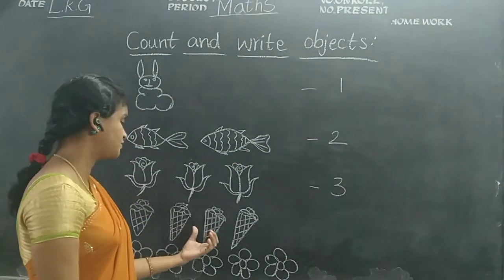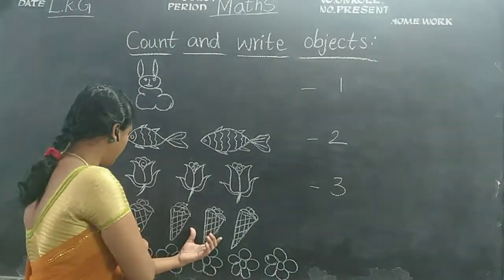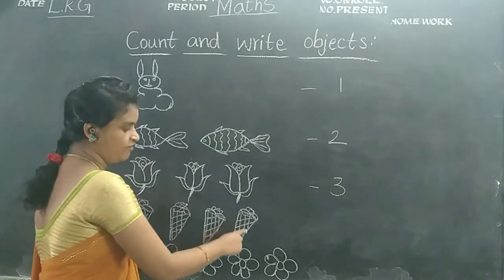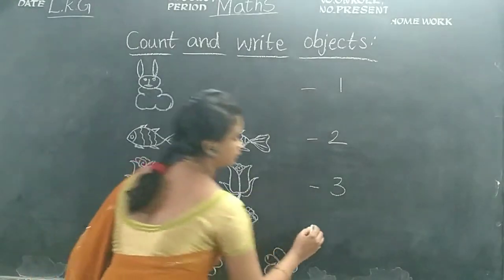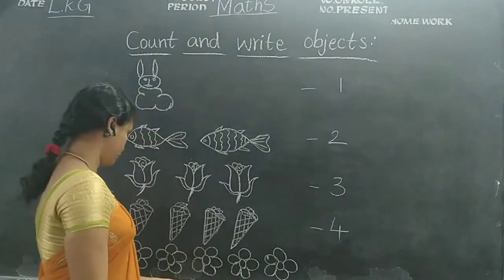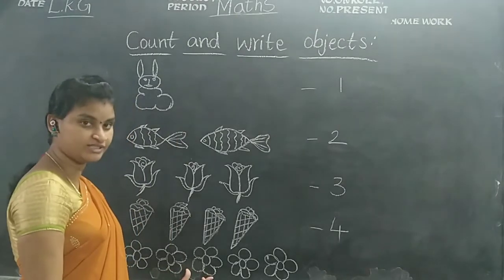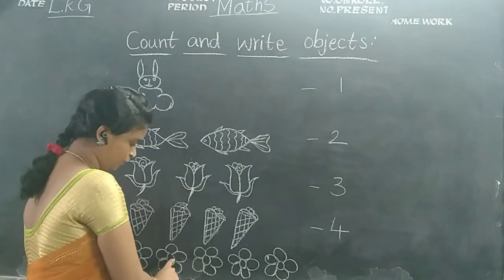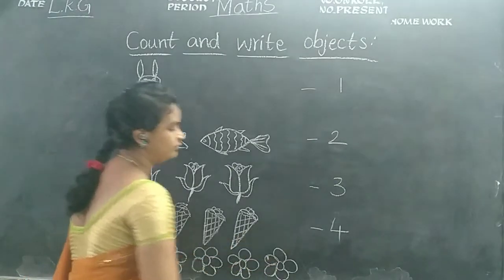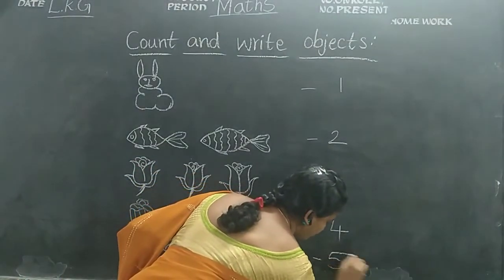Number three. Ice creams. How many are there children? Count children. One, two, three, four. You should write number four. How many are there children? One, two, three, four, five. You should write number five.